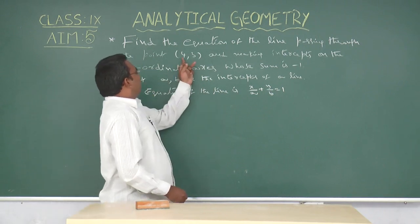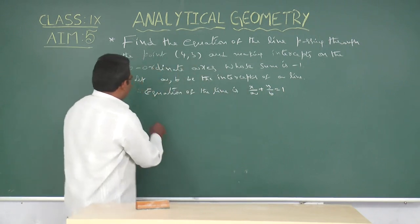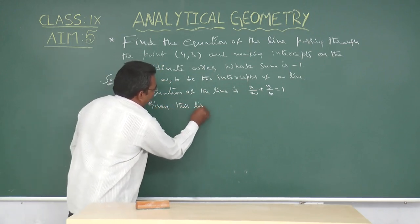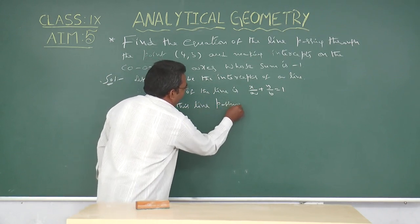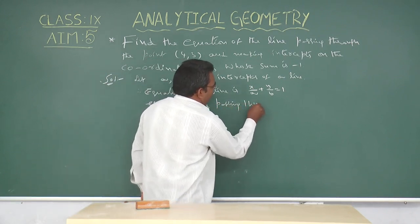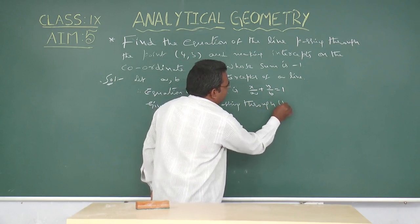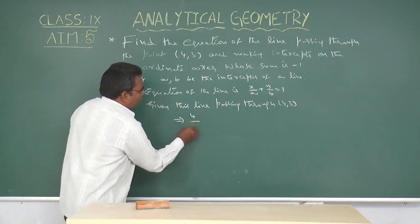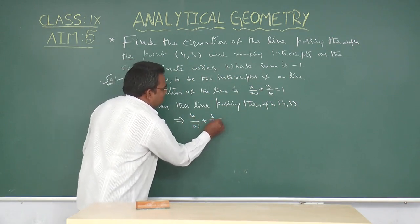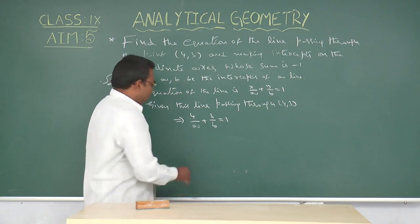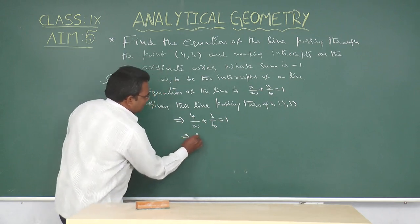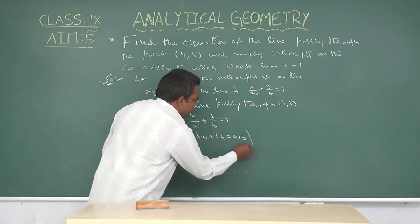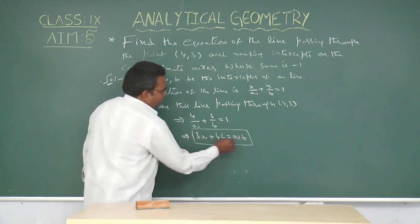Given that this line passes through the point (4, 3), that implies we have 4/a + 3/b = 1. That implies 3a + 4b = ab. Call it equation number 1.